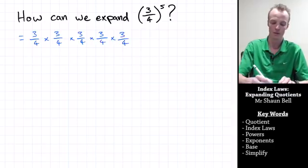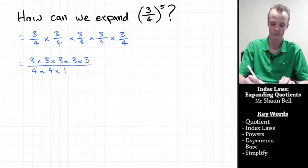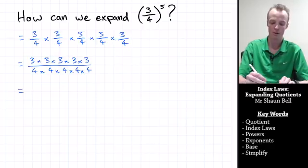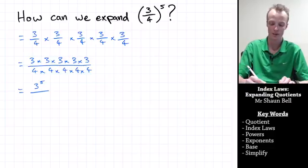When you're multiplying fractions with fractions, you multiply the numerators together and you multiply the denominators together. When we look at the top line, we've got 3 times itself 5 times, which is equal to 3 to the power of 5. When we look at the denominator, we've got 4 times itself 5 times, so that's going to be equal to 4 to the fifth power.